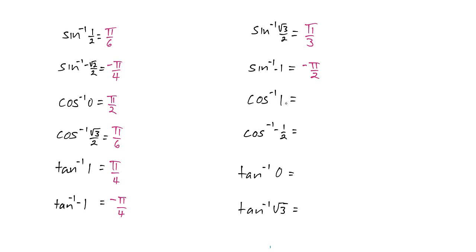Cosine inverse of theta is cosine inverse of 1. Cosine inverse of 1 happens at an angle of, well, 0. Zero radians.